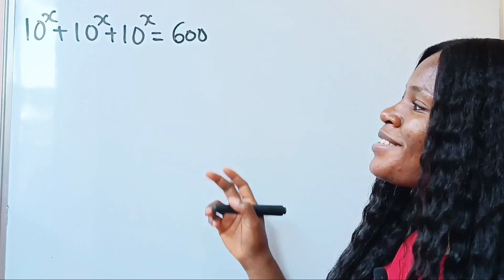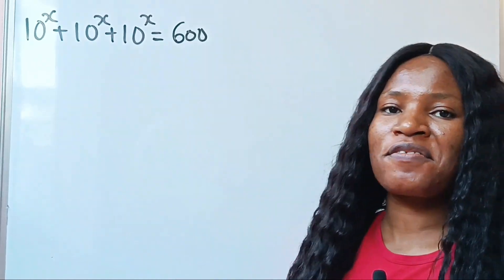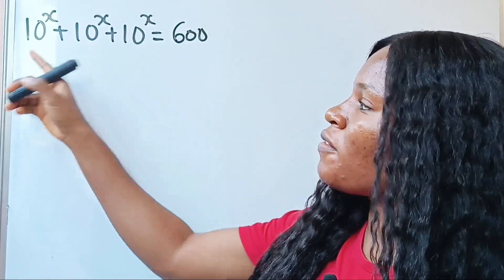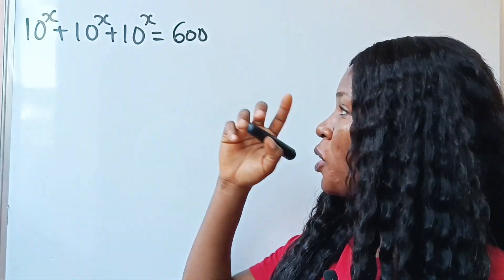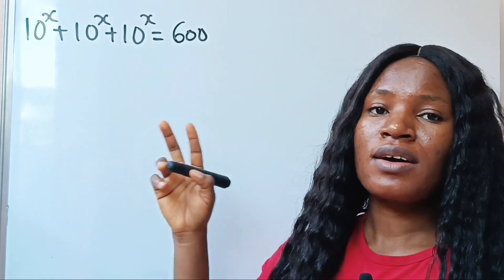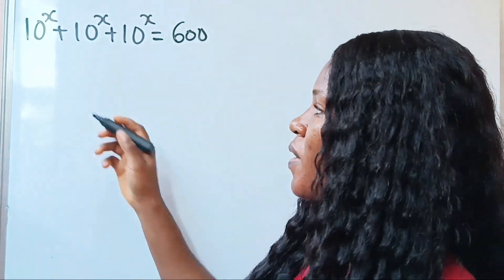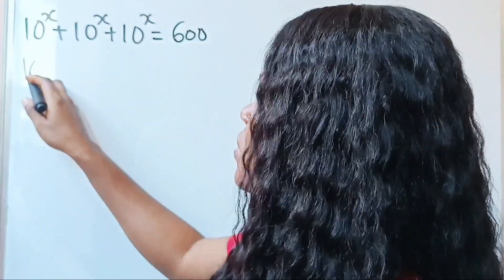Let's solve for the value of x. For the left-hand side of the equation, they have 10 to the power of x in common, so let's factorize that out.